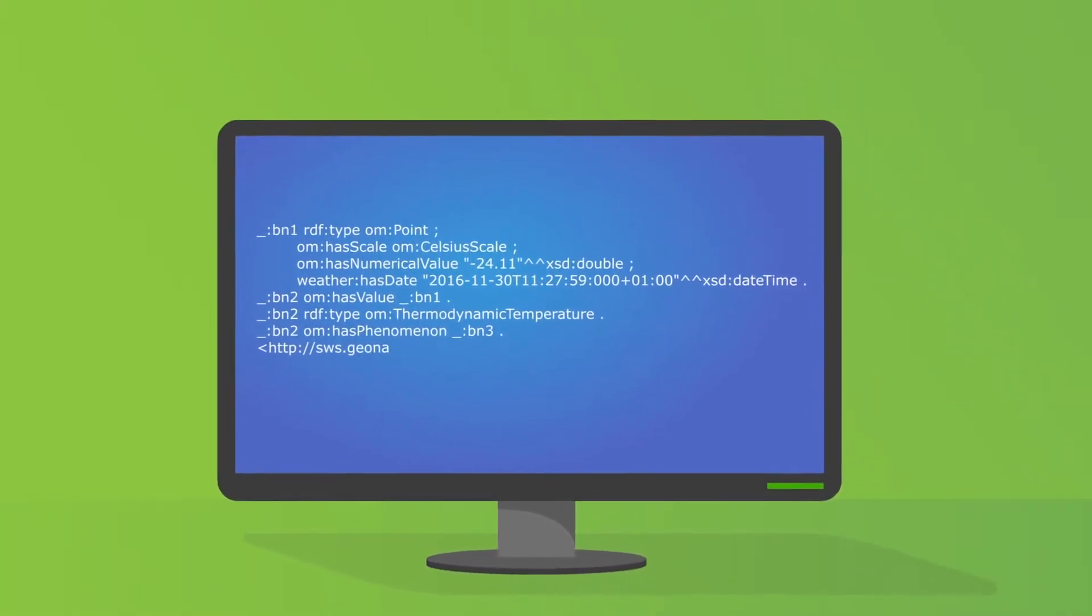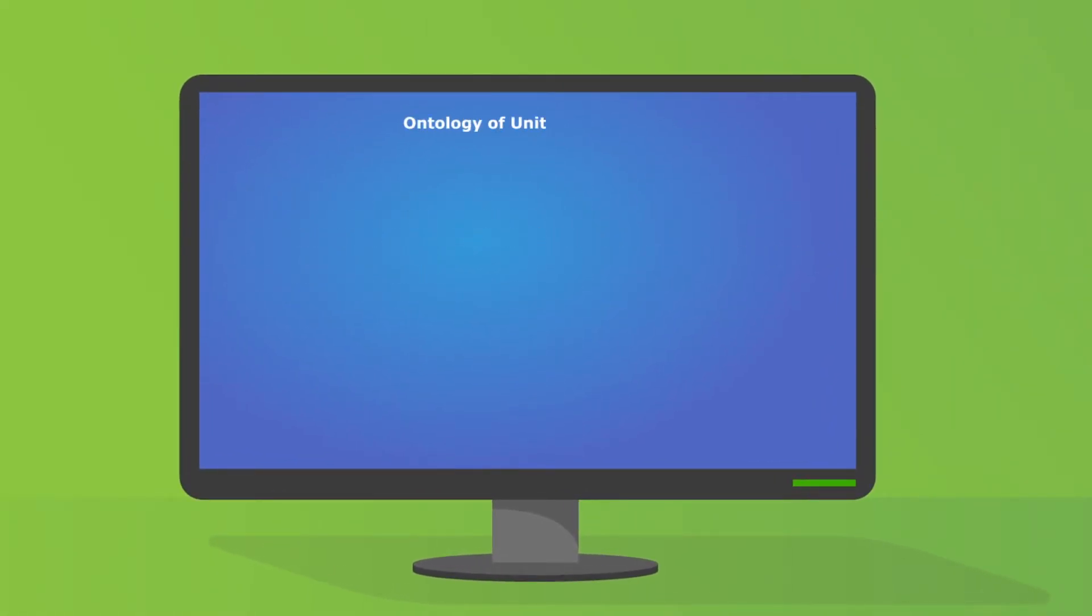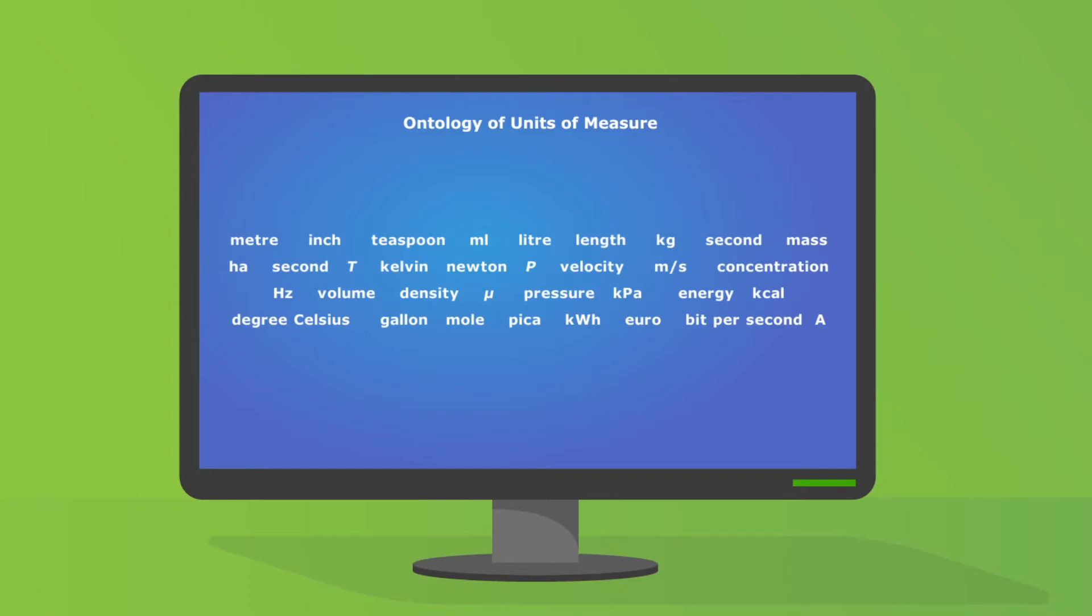Now we've created such a dictionary with a specific focus on taking measurements. Our ontology provides thousands of terms, like the notions of meter, inch, spoon and milliliters, litres. Allowing the computer to understand and process data in a meaningful way.